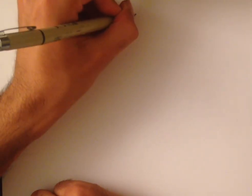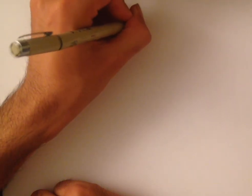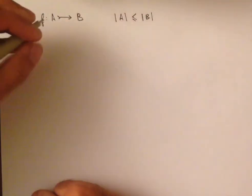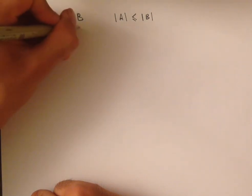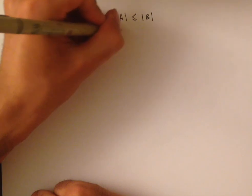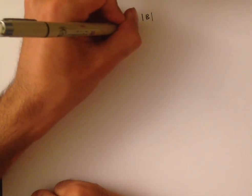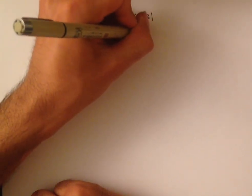Recall that if we have an injection F from A to B, then this means that the cardinality of A, which we can write as A with these two bars around it, is less than or equal to the cardinality of B. Similarly, if we have an injection G from B to A, then this means that the cardinality of B is less than or equal to the cardinality of A.